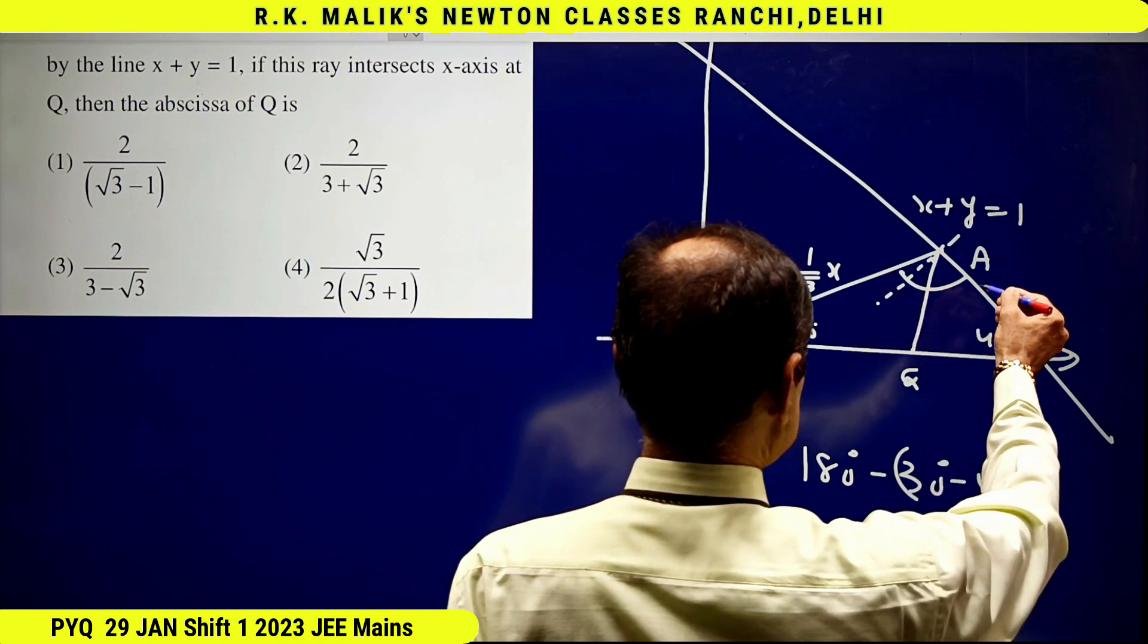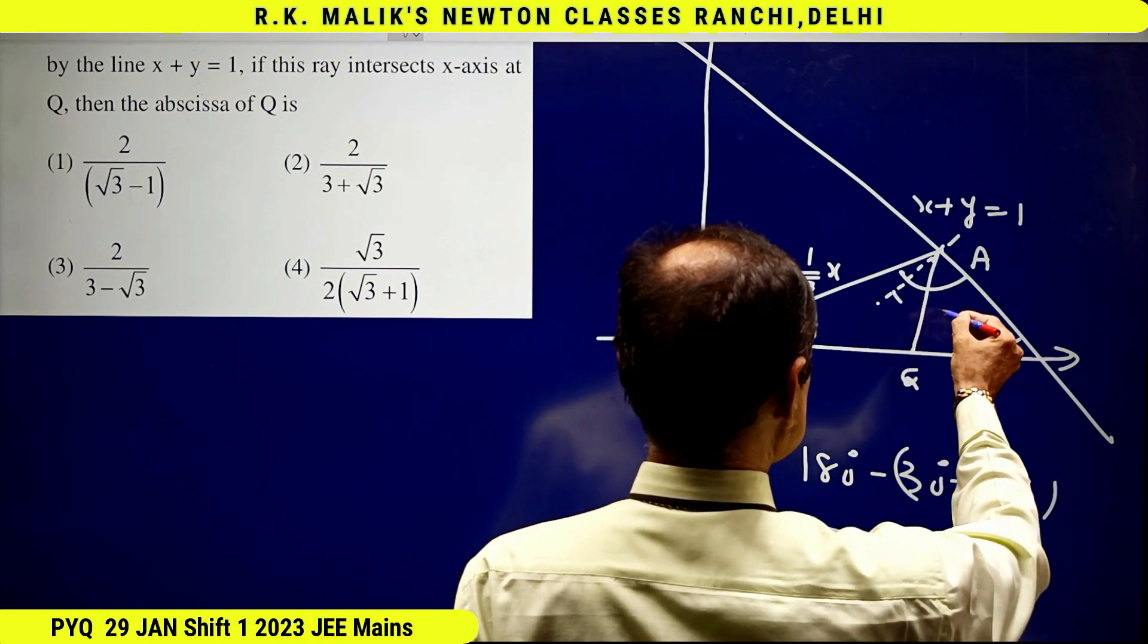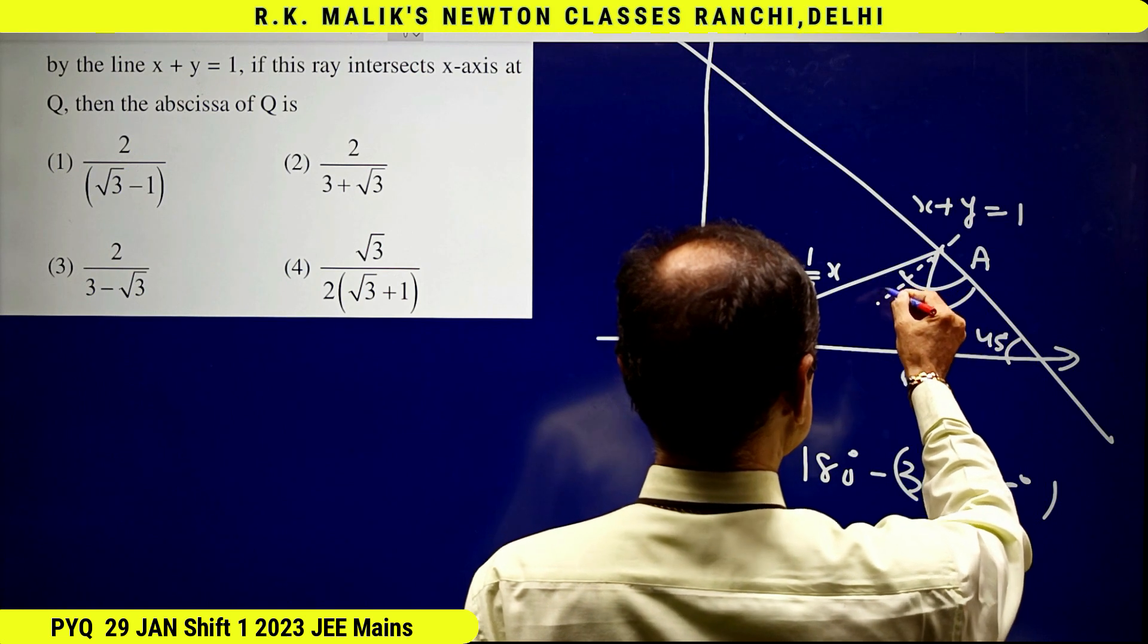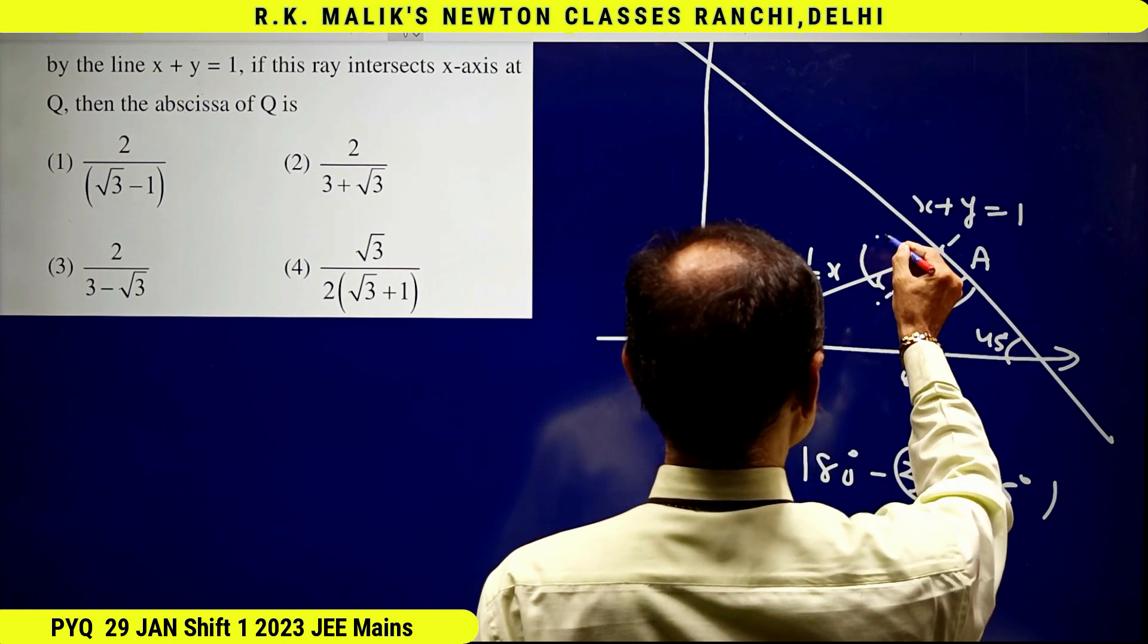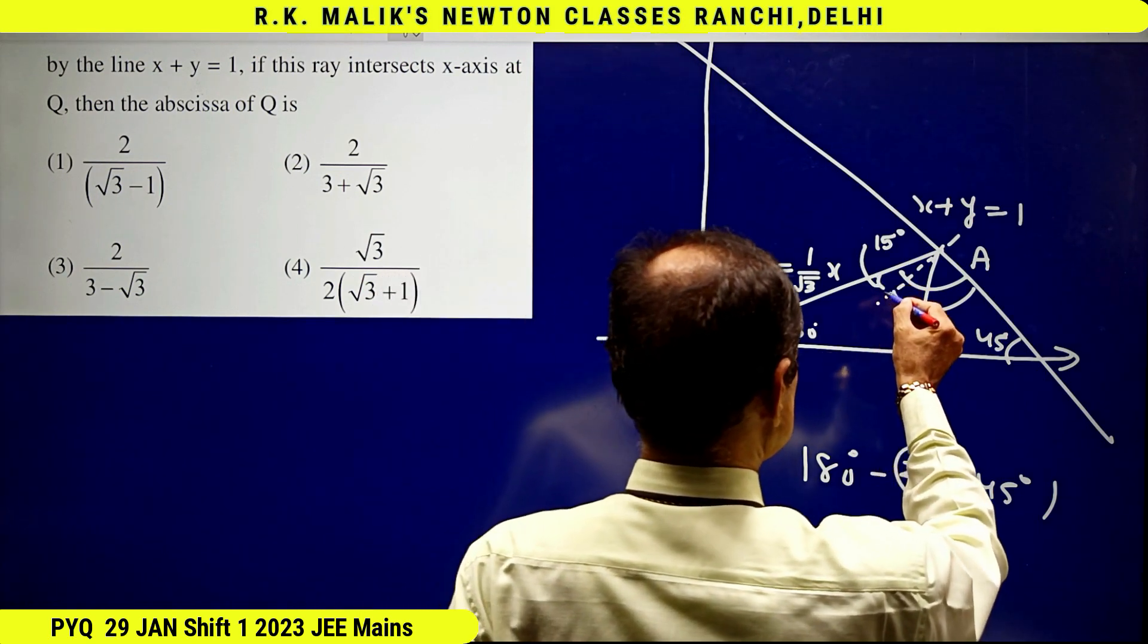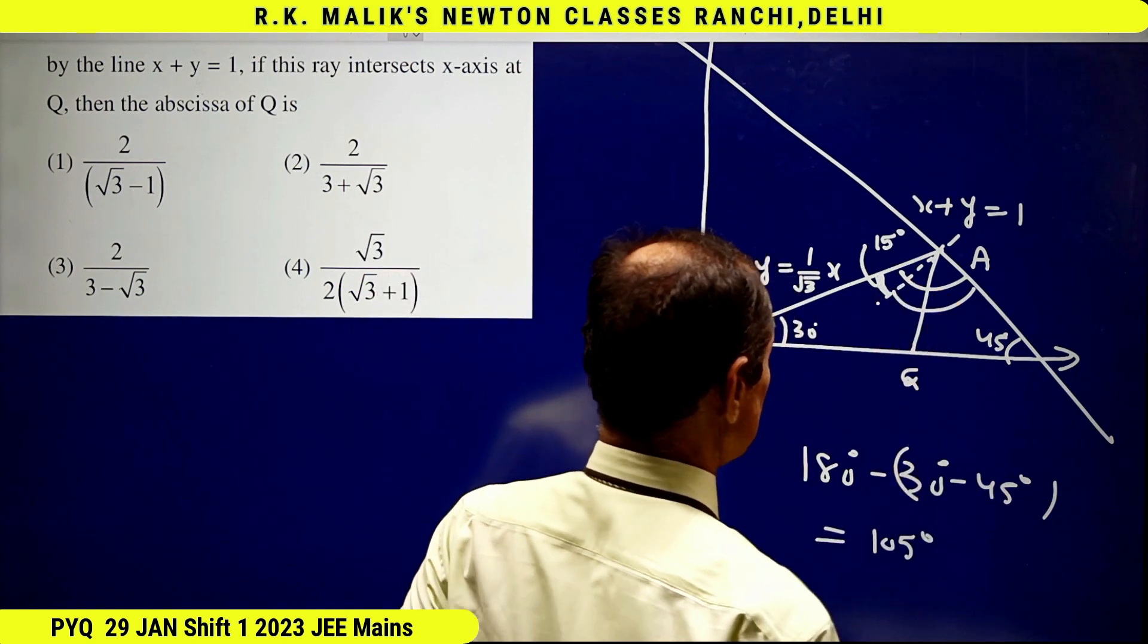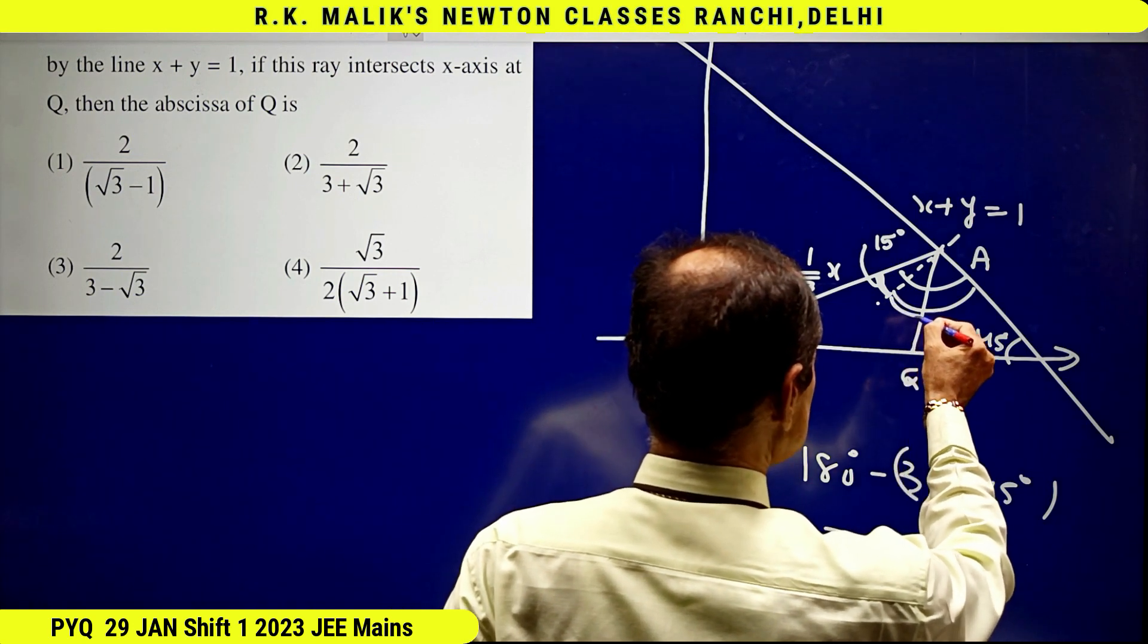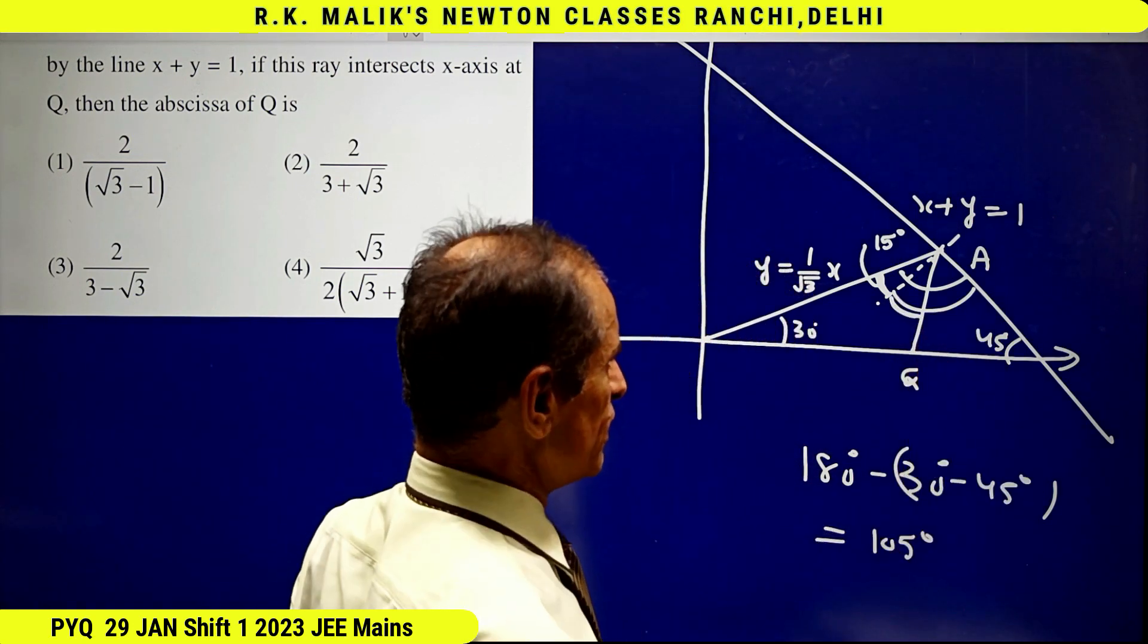And because this whole is 105 and this is already 90, therefore this angle will be 15 degrees. This will be 15 degrees. And therefore, this will also be 15 degrees.